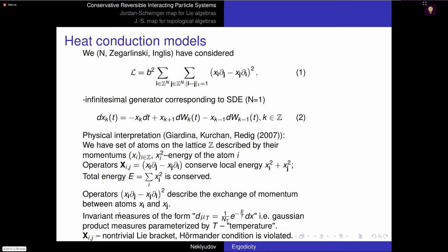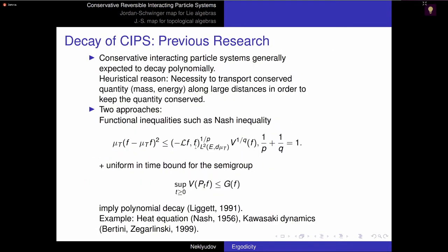We can see that we have a non-trivial Lie bracket, at least when we take neighboring operators. Each operator acts only on two variables x_i and x_j, so if two operators are near each other, they will not commute. Also, the Hörmander condition is violated: at the point zero, all operators are equal to zero, so the system is quite degenerate. For that reason, no inequality like the Nash inequality was previously known for this situation, making the first approach problematic to apply.